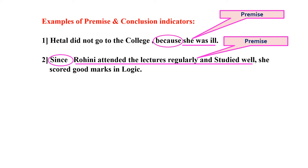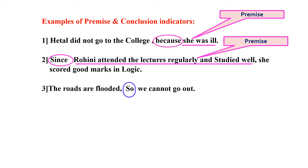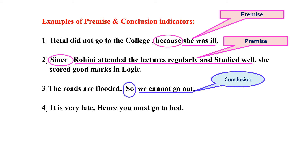Now, what are the conclusion indicators? The roads are flooded, so we cannot go out. The word 'so' indicates that 'we cannot go out' is the conclusion. And what will be the premise? Which proposition has supported this statement 'we cannot go out'? The roads are flooded — it gives support to the conclusion, so it is called the premise.